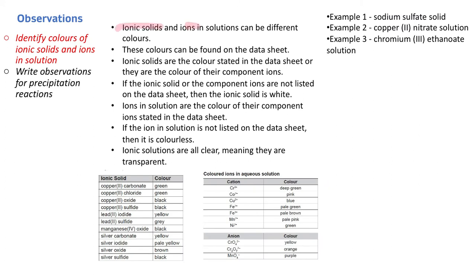Ionic solids and ions in solutions can be different colors. These colors can be found on the data sheet. We've done this once before when we did observations with halogens. So this is on the same page but on a different section. There are the colors of the ions in aqueous solution and the colors of ionic solids, because they also have colors as well.